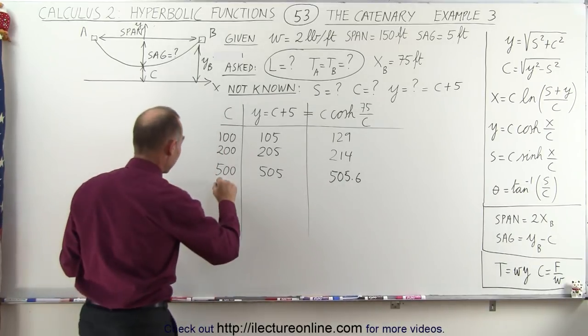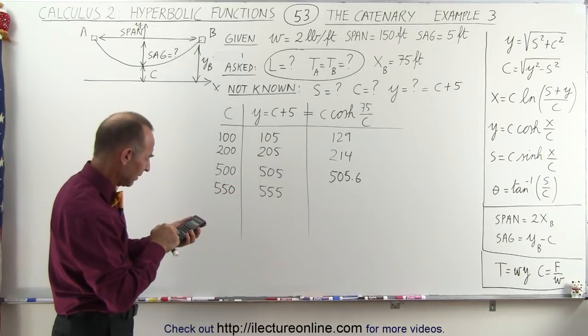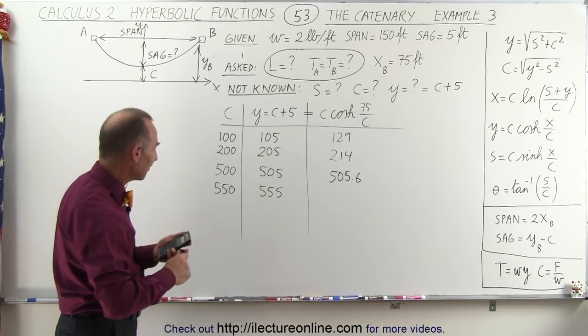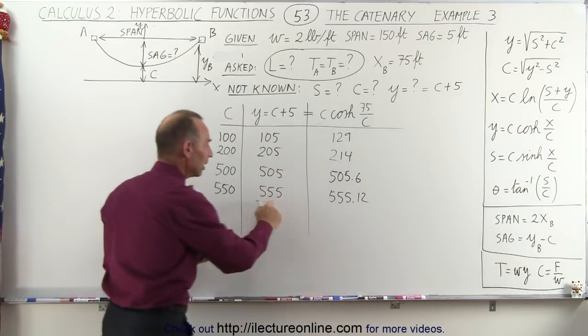Let's try 550. See if that works. So 550 times c which is 550. And we get 555.12.